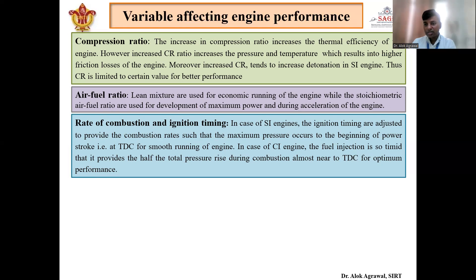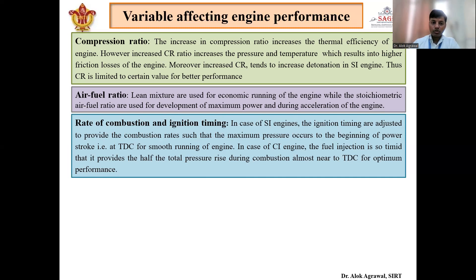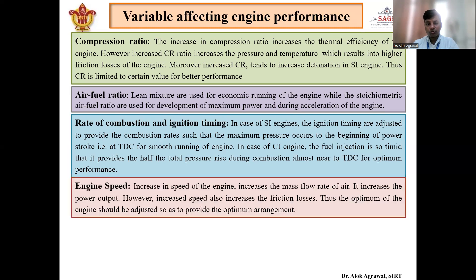In the case of a CI engine, the fuel injection is timed to provide about half the total pressure rise during combustion near the TDC. Because if there is more pressure rise when the piston is at TDC and about to start its power stroke from TDC to BDC, we can get maximum power output from the engine. This is how the rate of combustion and ignition timing is adjusted for maximum power output.